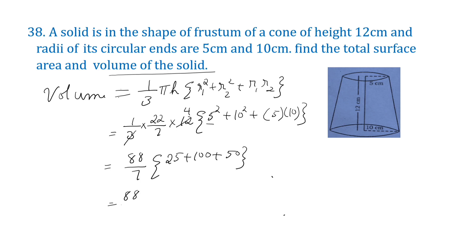(88/7) times 175. 25 plus 100 plus 50 equals 175. 88 times 25 equals 2200. What is its unit? Centimeter cube. So volume is 2200 centimeters cube.